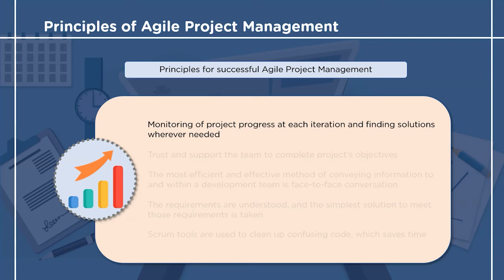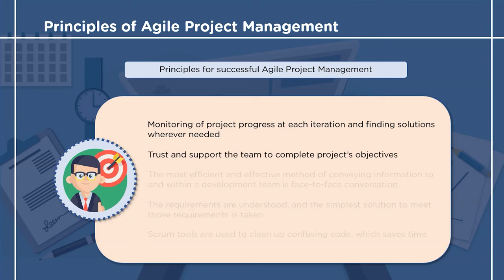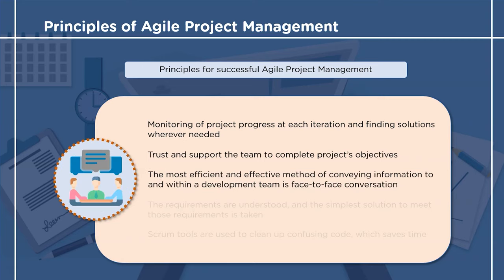The fifth principle pays attention to the factor of coordination among the team members. The sixth principle refers to the process of monitoring and tracking the progress of the project at the end of each sprint and making amendments wherever needed. The next principle states that there must be a feeling of trust and support towards the team to complete the project's objectives.